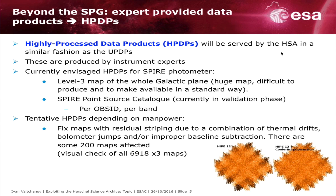For the photometer, we currently have very few HPDPs. One of them is the Level 3 large map of the galactic plane. It's a huge map — very difficult to produce for normal users because it requires a huge amount of memory, and it's very difficult to make available in the standard way because it's a very big file. That's why we will process it and provide it as a highly processed data product in small chunks via the HPDP interface.